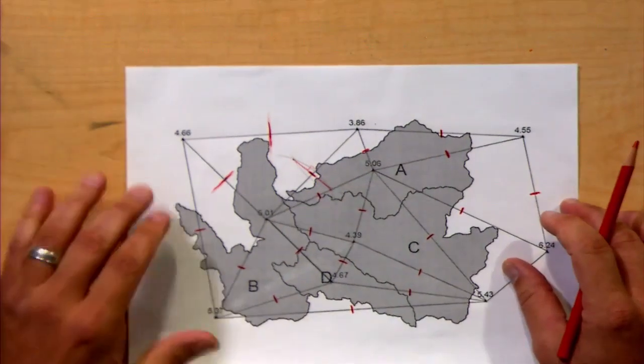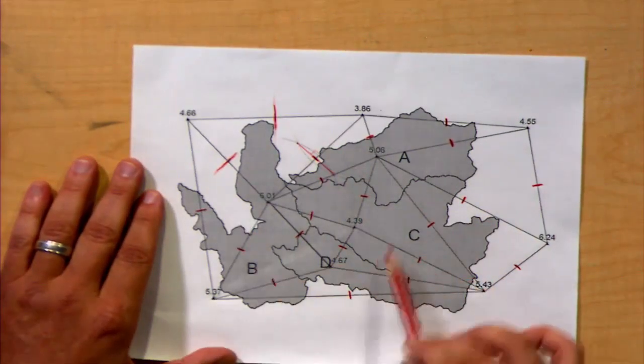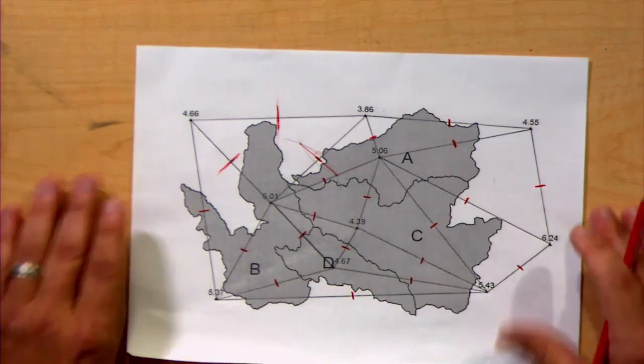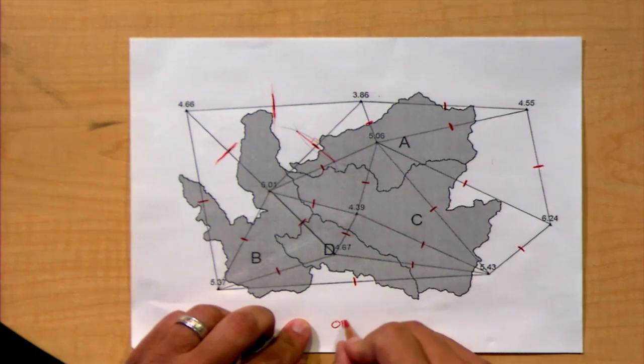So what we have to do for each of these triangles—1, 2, 3, 4, 5, 6, 7, 8, 9, 10, 11, 12—there are 12 triangles here. For each of these triangles, we're going to try to find the orthocenter.